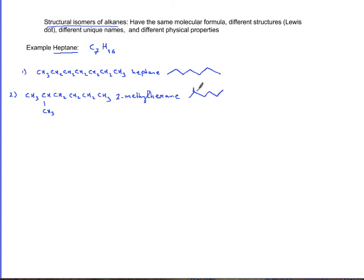The third isomer: I'm going to move this methyl to the third carbon and I'm totally producing a new structure. CH3, CH, CH2, CH2, CH3. Now this time I have 1, 2, 3, a methyl group and hexane, so this is 3-methylhexane.